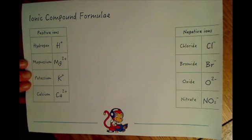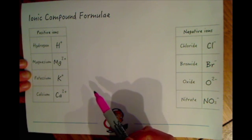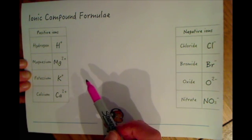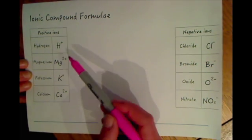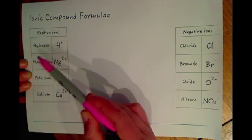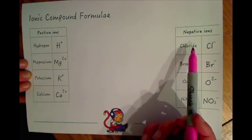This video is about writing formulae for ionic compounds. In your examination you might be asked to write the formula for a compound provided that you are given the positive ion and the negative ion.